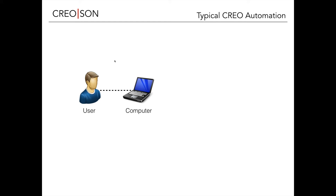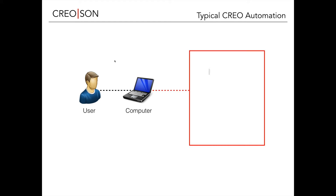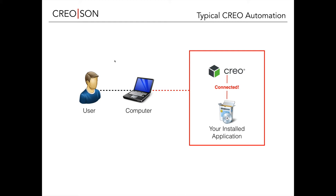A typical Creo automation basically looks like this. On your computer you have Creo, and then you typically have your installed application to connect and automate Creo, and they're typically bound together. So when you start up Creo, your application starts, or it's a standalone thing that has to communicate exclusively with it on the local computer.